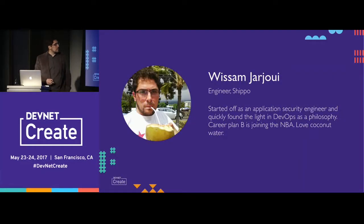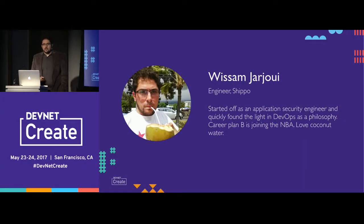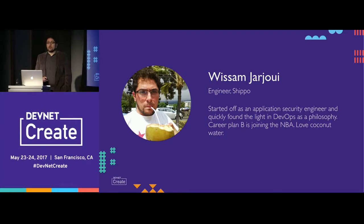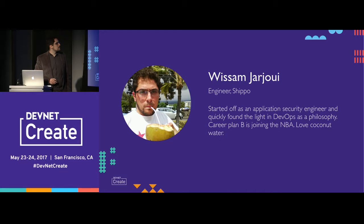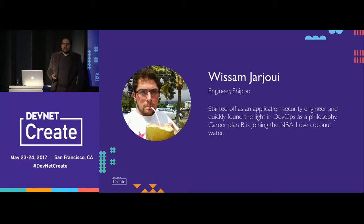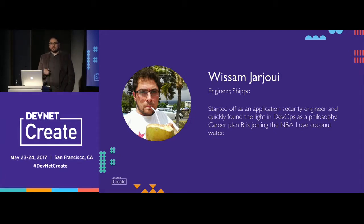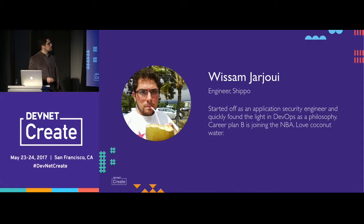My name is Usam. I'm an engineer at Shippo. I started off as a security engineer on the Box security team — I really loved it. I got a chance while I was there to work with the SRE team, which was great — I had a lot to learn from them. And ever since I fell in love with DevOps philosophy. I like calling it philosophy because all software engineers should be in the habit of deploying their code from the first line all the way to production.